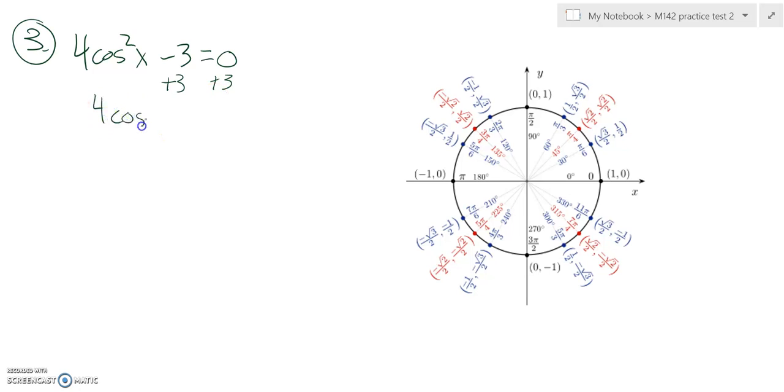And if I do that, I still have this four cosine squared equals three. This is four times that, so I'm going to divide both sides by four. Cosine squared x equals three-fourths.